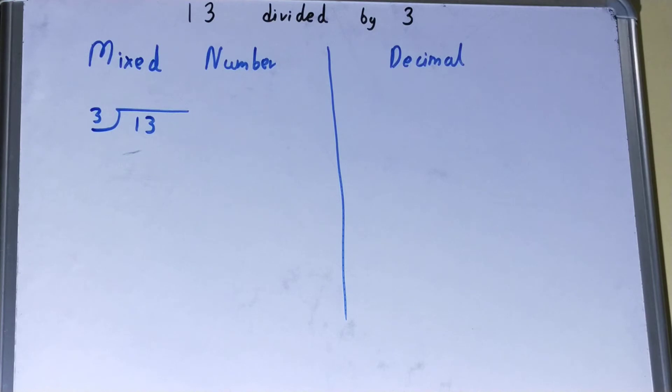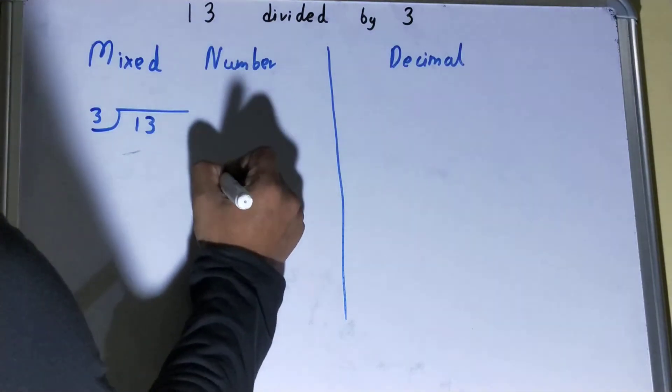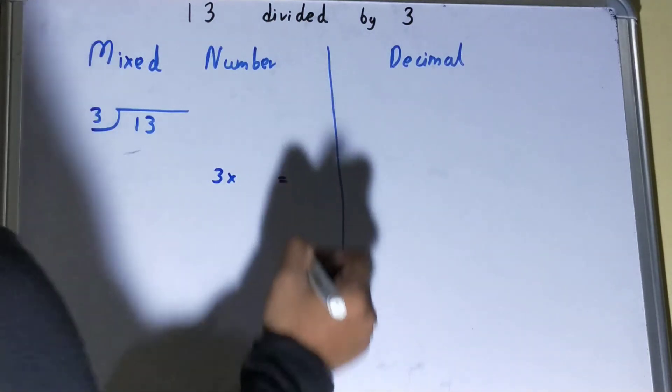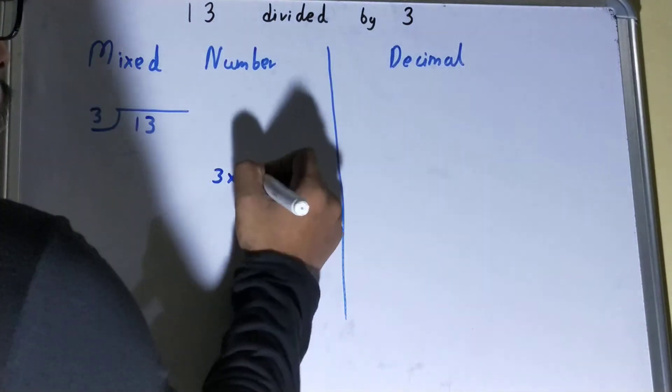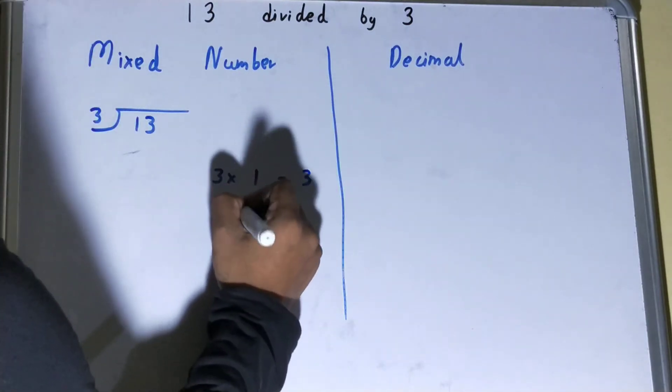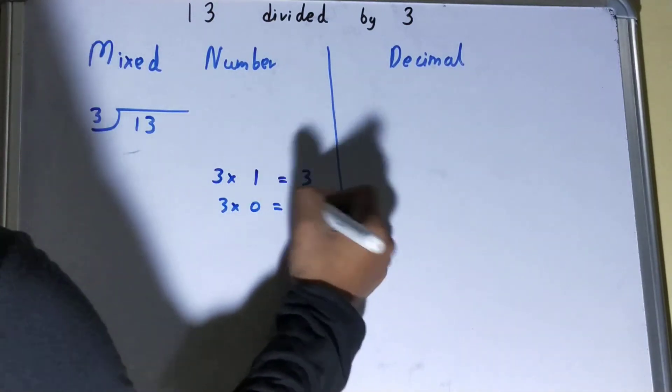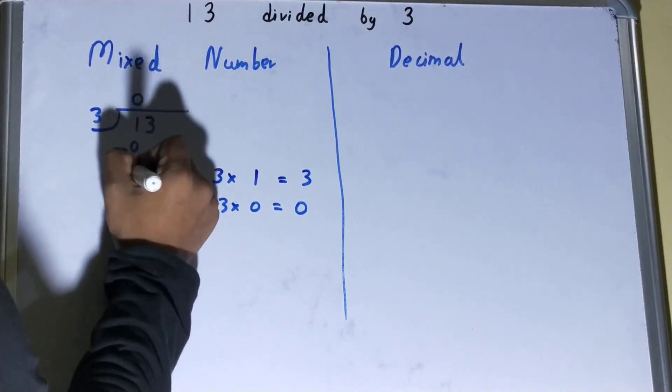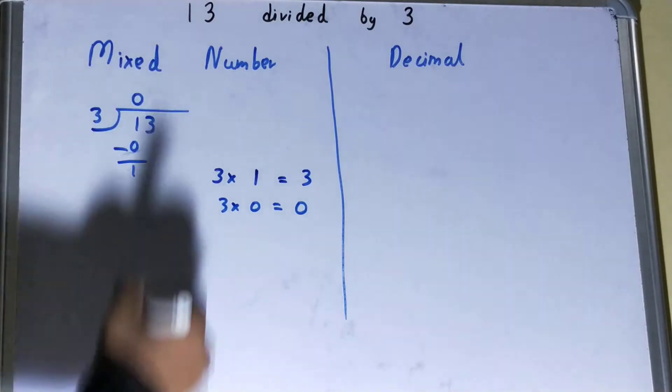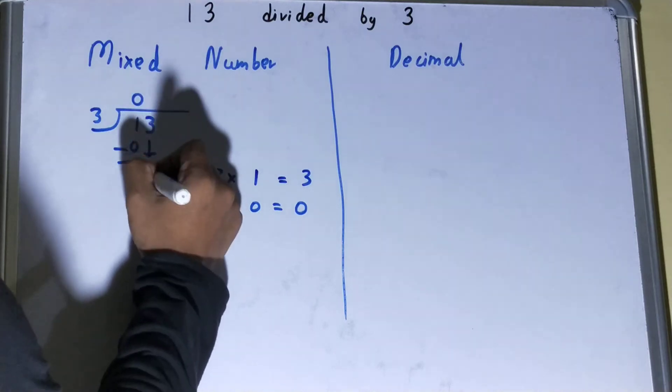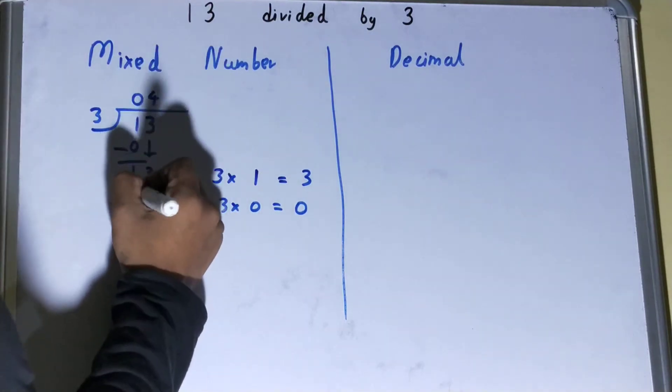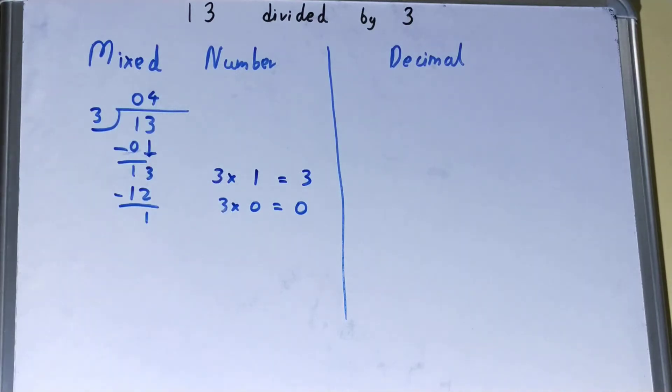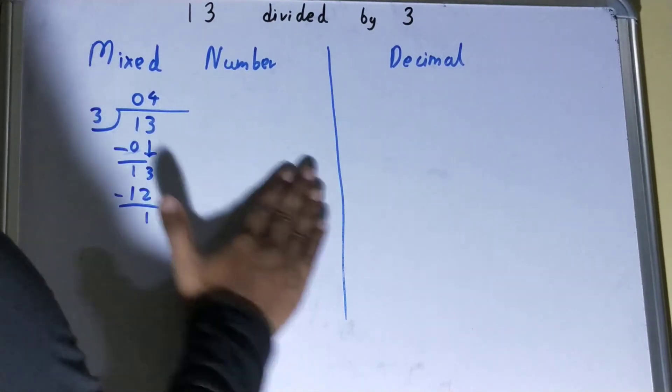What I need to multiply with 3 to get a number less than or equal to 1? Three ones is three. Three into zero is zero, so I'll have one. Now I'll bring this three down. Three fours is twelve, and I will be left with one.